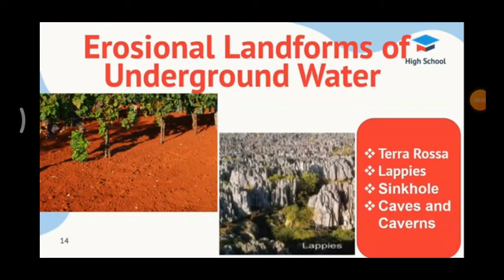As an agent of gradation, underground water creates distinct landforms in limestone regions called karst topography. Groundwater is an active agent in limestone regions. Karst topography is formed due to the dissolution of soluble rocks such as limestone, dolomite, and gypsum.